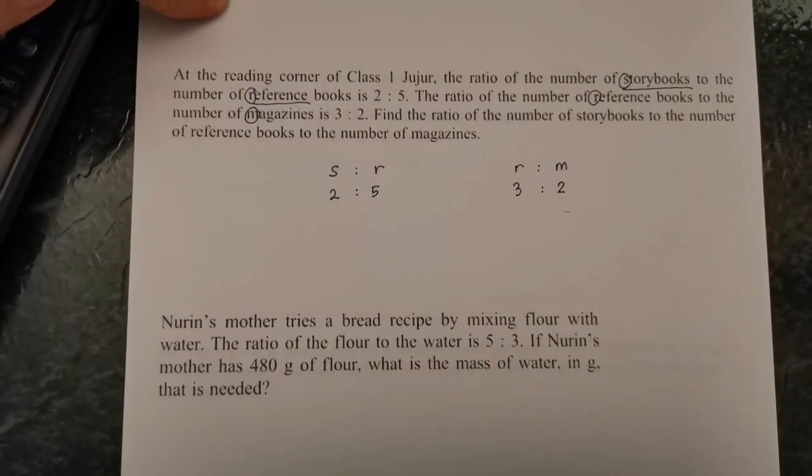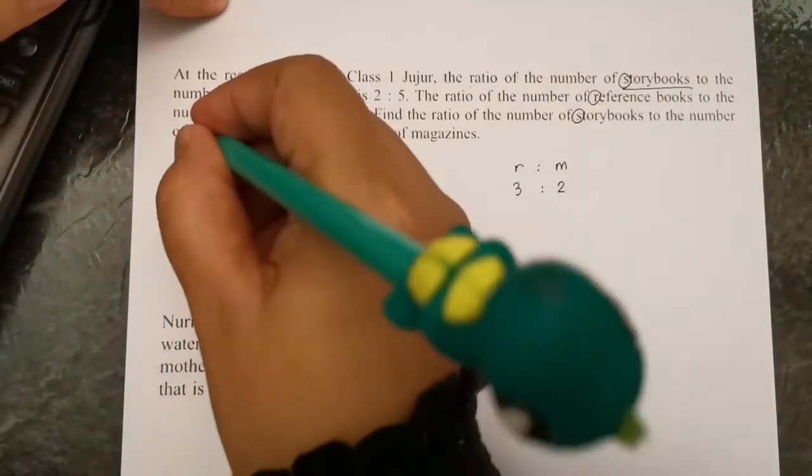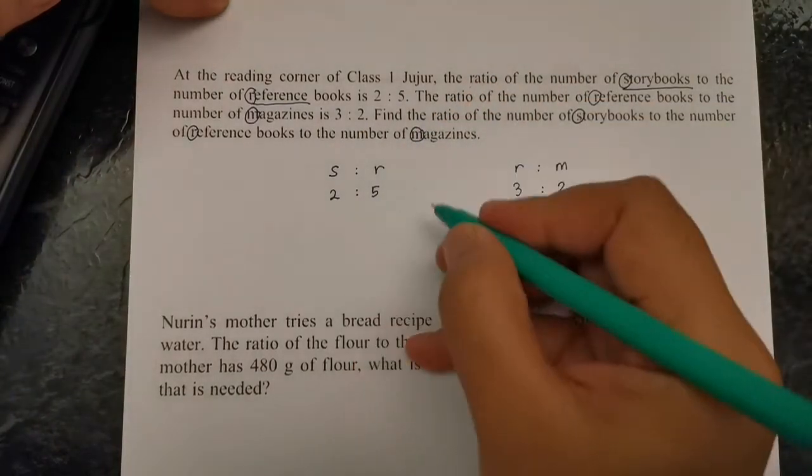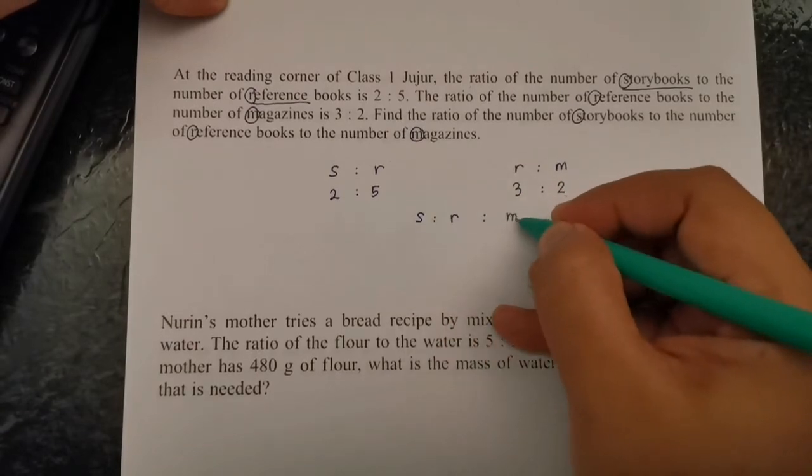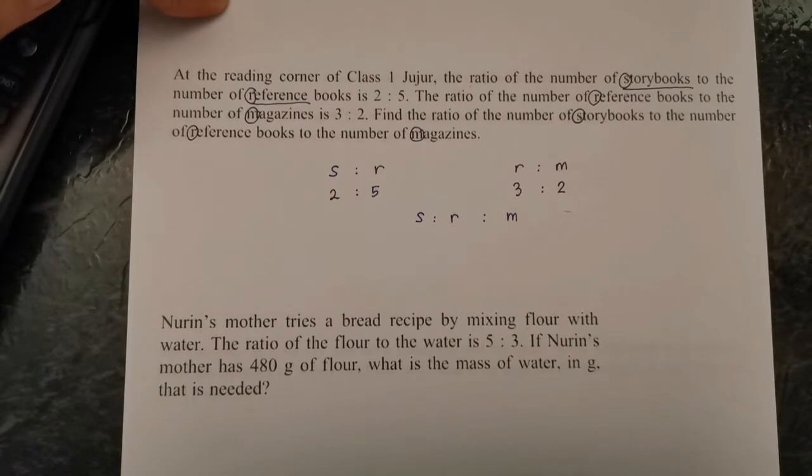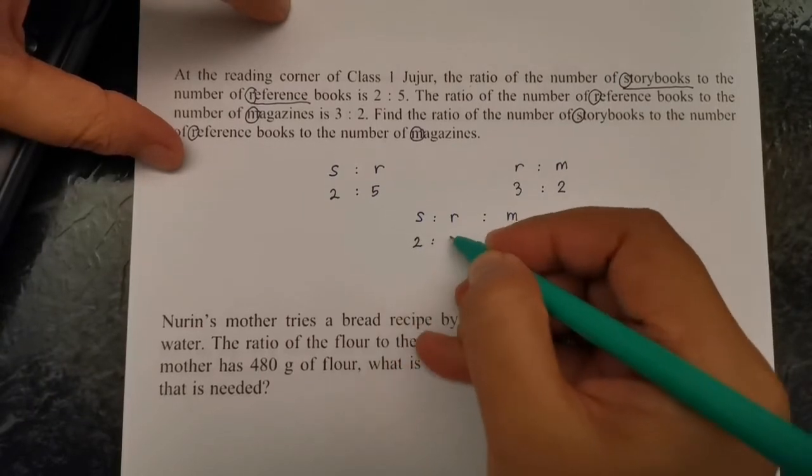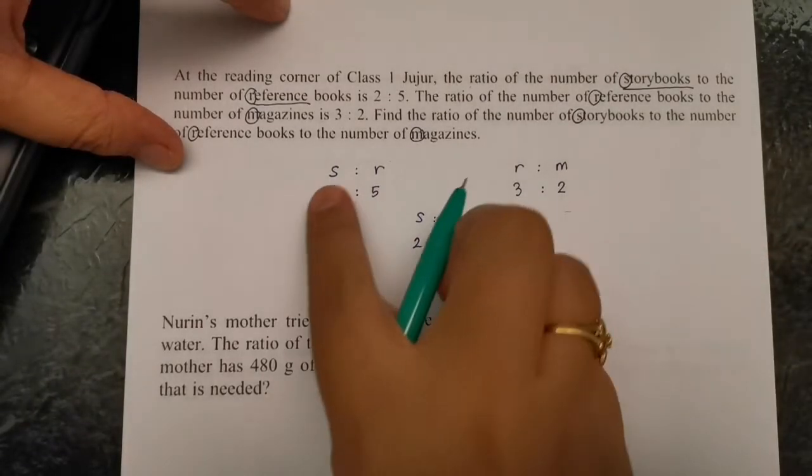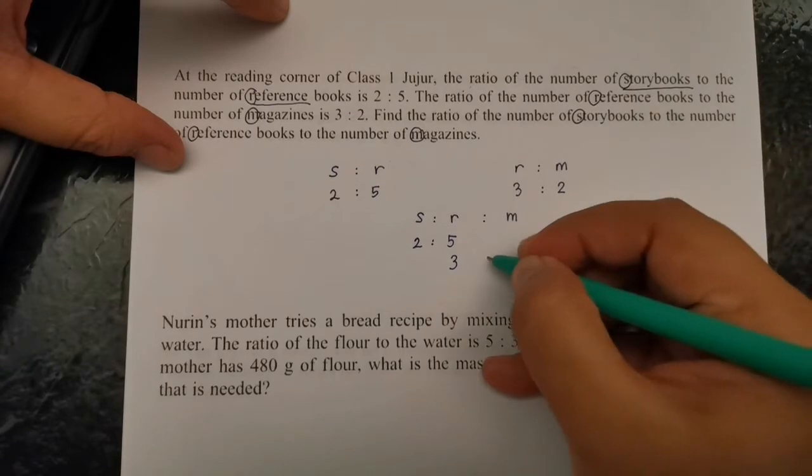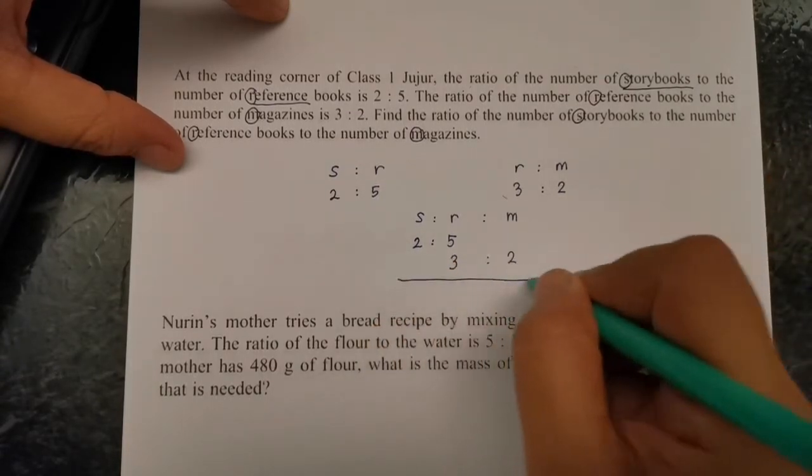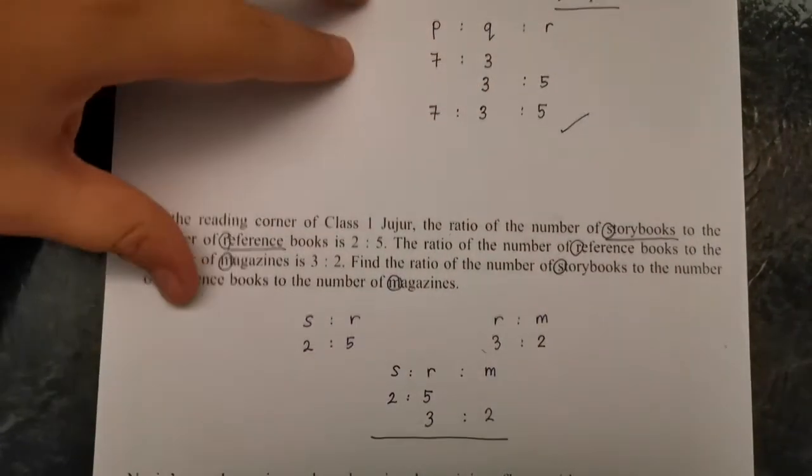Find the ratio of storybooks to reference to magazines. In this topic you need to understand the question. Put in 2:5, and 3:2 - the R goes under R, this goes under M. This case is different from before. We look at 3 and 5 - can we make them the same? We need to cross multiply.